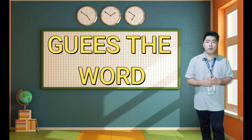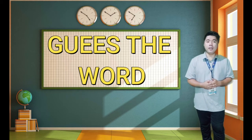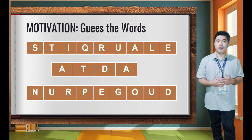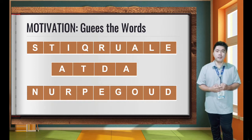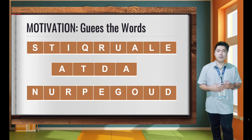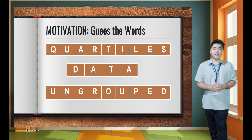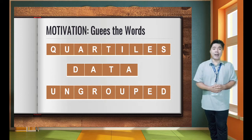Before we proceed with our topic for today, let's do an activity — guess the word. Given shuffled letters, you need to guess what the word is. We have 3 shuffled words on the screen. The first word is quartiles, the second is data, and the third one is ungroup.